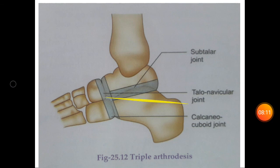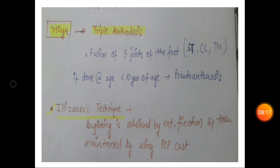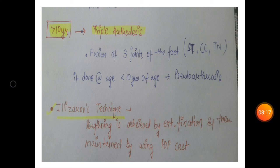The last procedure for correction of CTEV is Ilizarov's technique. Here, lengthening is achieved by external fixation using the external fixator device. Limb lengthening is achieved and then maintained by using a POP cast. This is Ilizarov's technique. Thank you.